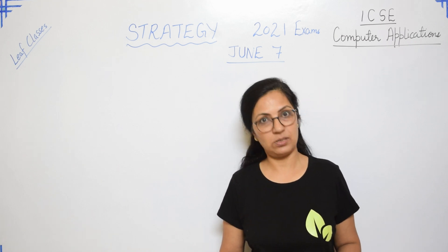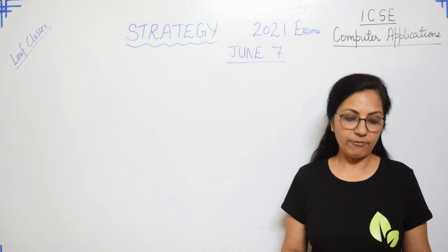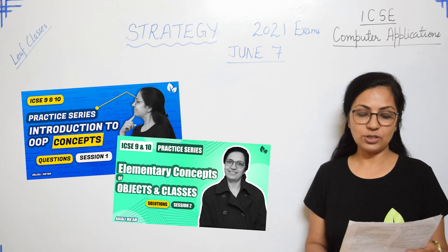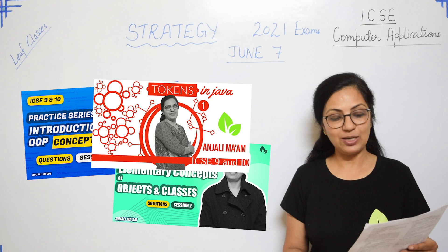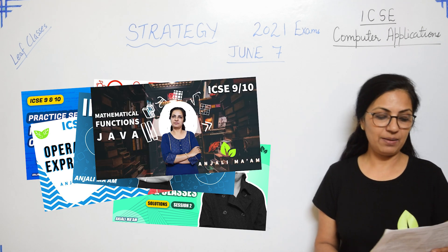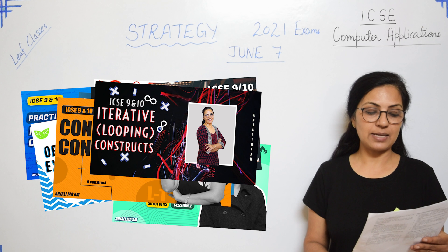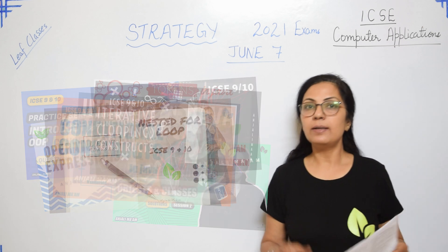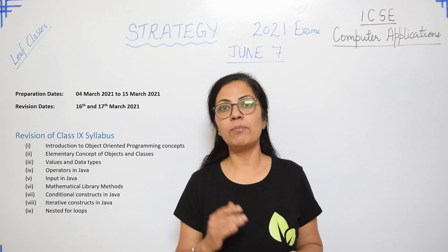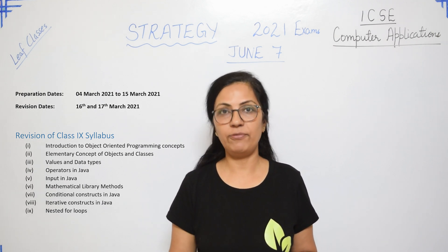In the Class 9 syllabus revision, you have seven points: first, Introduction to Object-Oriented Programming Concepts; second, Elementary Concept of Objects and Classes; third, Values and Data Types; fourth, Operators in Java; fifth, Input in Java; sixth, Mathematical Library Methods; seventh, Conditional Constructs in Java; eighth, Iterative Constructs; and ninth, Nested Loops. For this revision of Class 9, I have scheduled the dates from 4th March till 15th March.